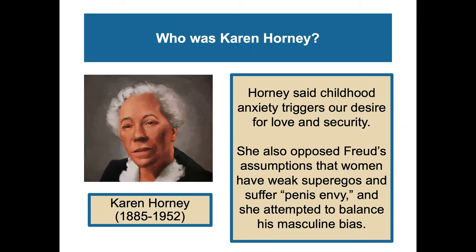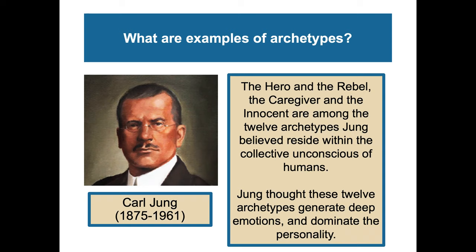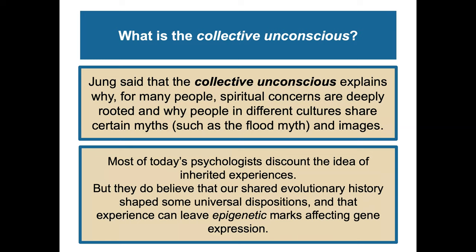Karen Horney said childhood anxiety triggers our desire for love and security. She also opposed Freud's assumptions that women have weak superegos and suffer penis envy, and she attempted to balance his masculine ideas. Carl Jung, perhaps Freud's most famous student, believed the unconscious contains more than repressed thoughts and feelings. He proposed the concept of a collective unconscious — a common reservoir of images or archetypes derived from species-wide universal experiences. Things like the hero, the rebel, the caregiver, and the innocent are among the twelve archetypes Jung believed reside within our collective unconscious. Jung thought these archetypes generate deep emotions and dominate the personality, and that the collective unconscious explains why spiritual concerns are deeply rooted and why people in different cultures share similar myths, such as the flood myth.